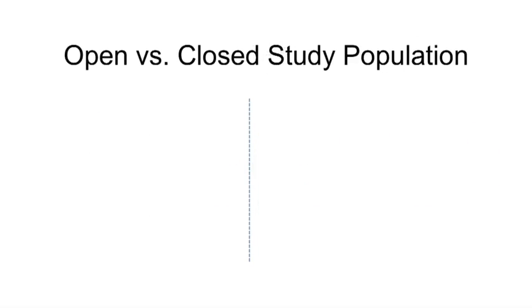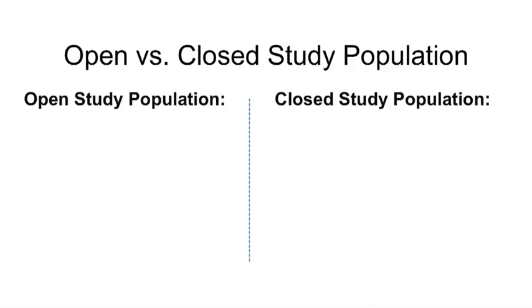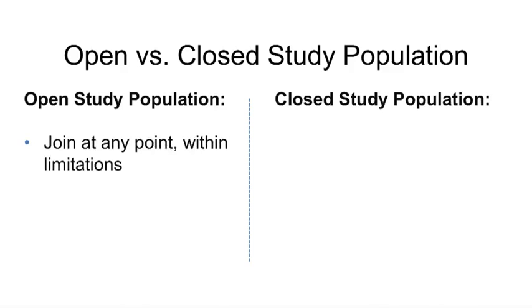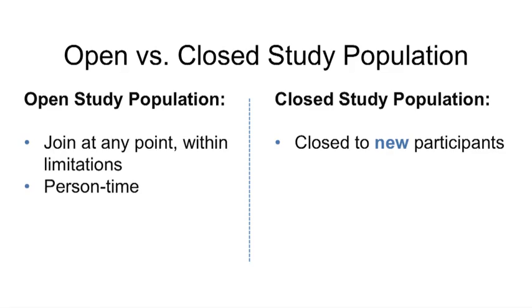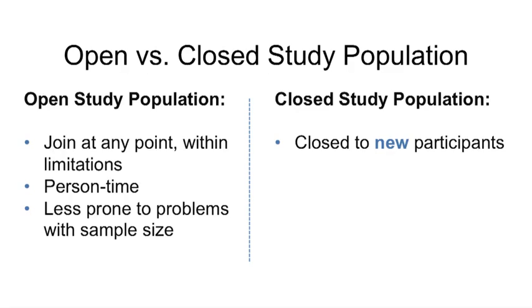Cohort study populations can be open or closed. In an open cohort, individuals are allowed to join the study at any point in time from the beginning to the end, within limitations. In a closed cohort, the entire cohort is formed at the beginning of the study and is closed to new participants. An open study population collects person-time and is less prone to problems with sample size, because study subjects can contribute person-time even if they are in the study for only a short time.